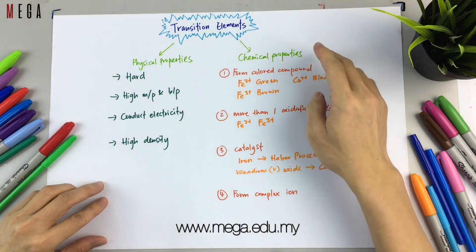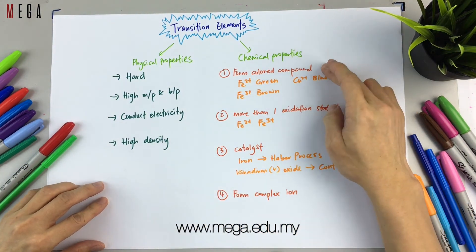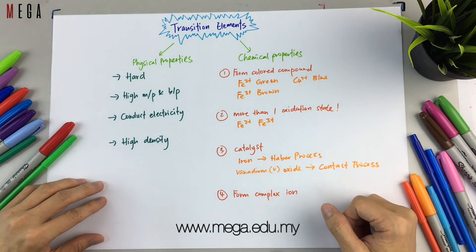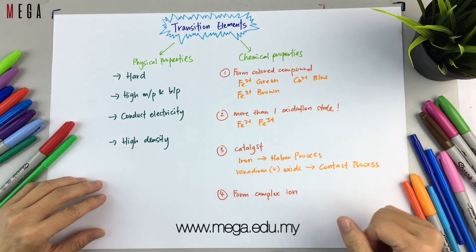Last but not least, transition elements form complex ions. These are the important properties of transition elements. Thanks.